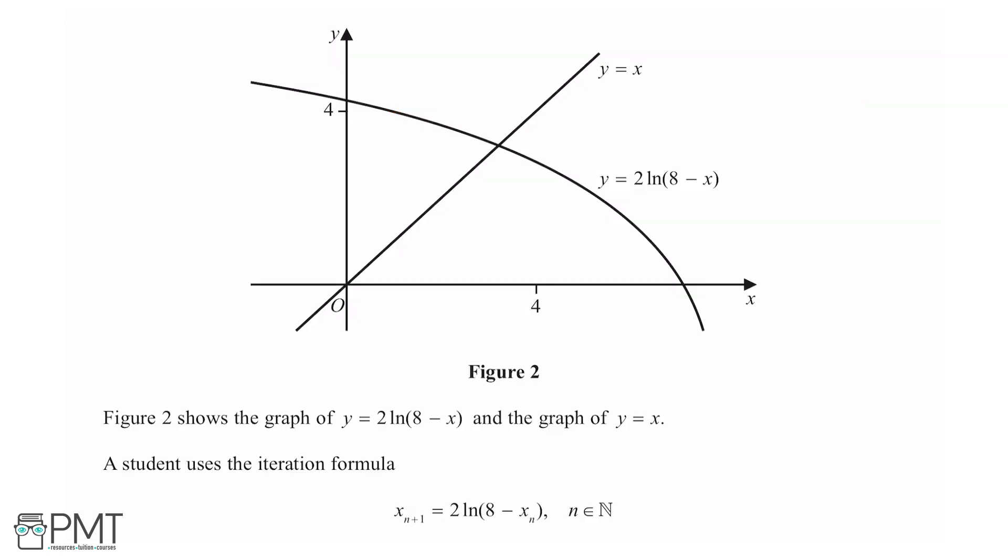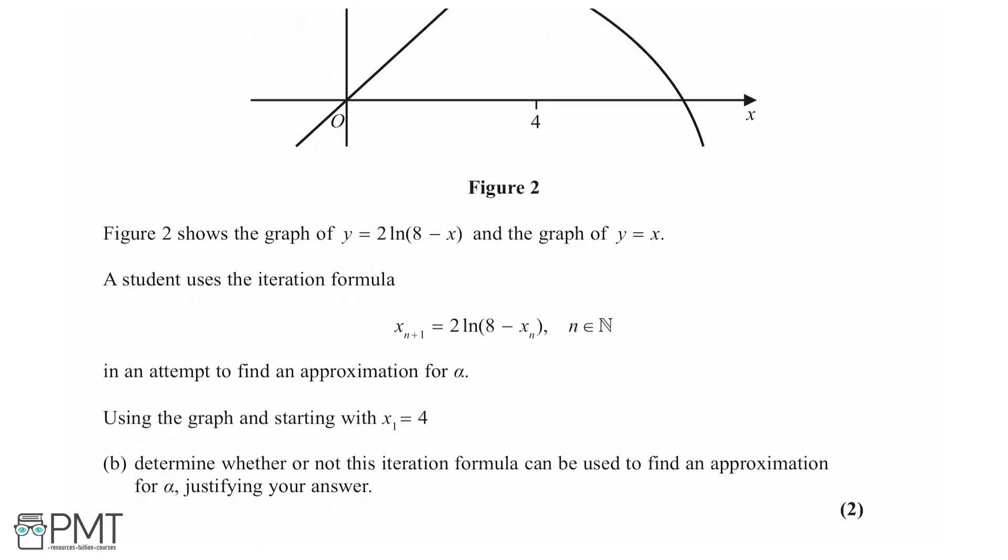Part B shows us a graph labeled Figure 2. It says Figure 2 shows the graph of y equals 2ln(8 - x) and the graph of y equals x. The student uses the iteration formula x_{n+1} equals 2ln(8 - x_n), where n is a natural number, in an attempt to find an approximation for α.